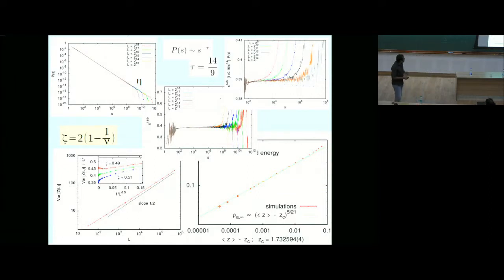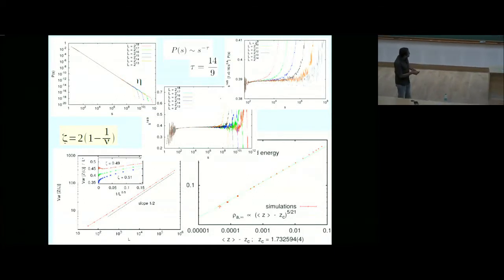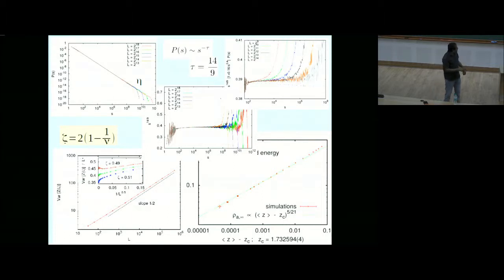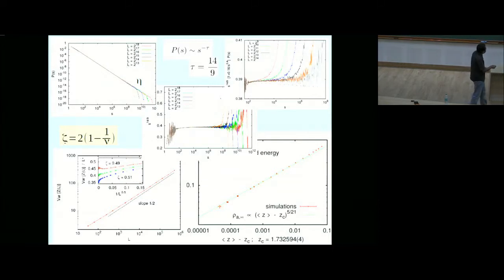Regarding hyperuniformity: the variance of particle number in a volume V goes as square root of V, not V. This breaks the central limit theorem—that is hyperuniformity. So the variance versus L has slope one-half on a log-log plot, meaning fluctuations scale as sqrt(L), not L.